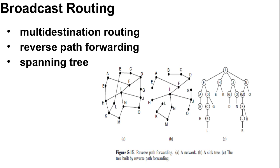This is the second method, reverse path forwarding. It is elegant and remarkably simple once it has been pointed out. When a broadcast packet arrives at a router, the router checks to see if the packet arrived on the link that is normally used for sending packets towards the source of the broadcast. If so, there is an excellent chance that the broadcast packet itself followed the best route from the router and is therefore the first copy to arrive at the router. This being the case, the router forwards copies of it onto all links except the one it arrived on. If the broadcast packet arrived on a link other than the preferred one for reaching the source, the packet is discarded as a likely duplicate.